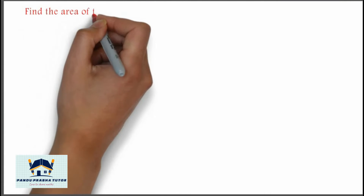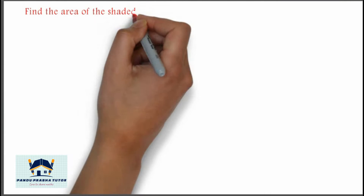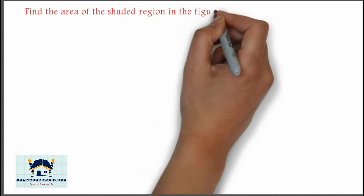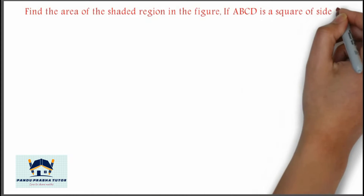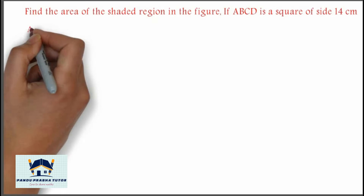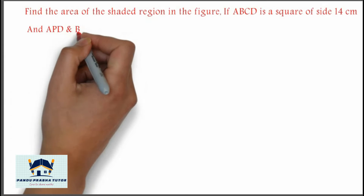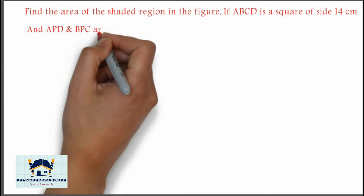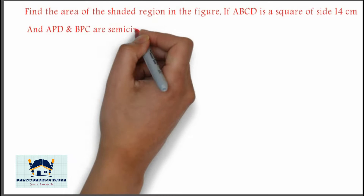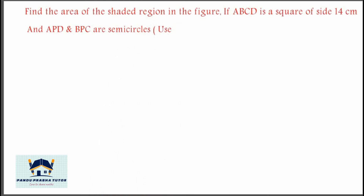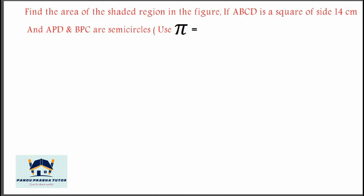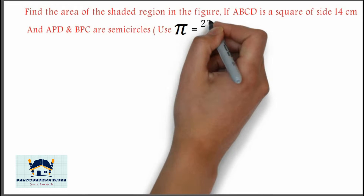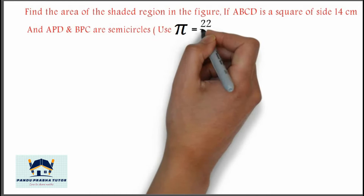Now we will take one question. Find the area of the shaded region in the figure, if ABCD is a square of side 14 centimeters, and APD and BPC are semicircles. Use π equal to 22 divided by 7.